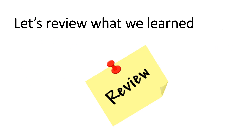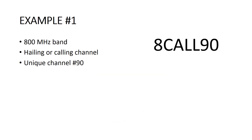Let's review what we have learned so far. In example number one, 8CALL90: we see that this channel is in the 800 MHz band, it is primarily used for hailing or calling, and its unique channel number is 90 — the only channel numbered 90 in the plan.